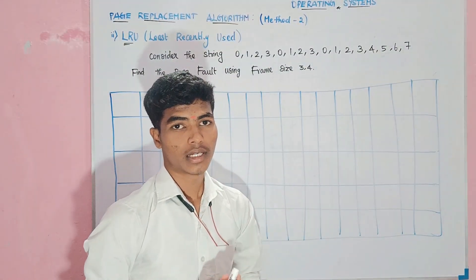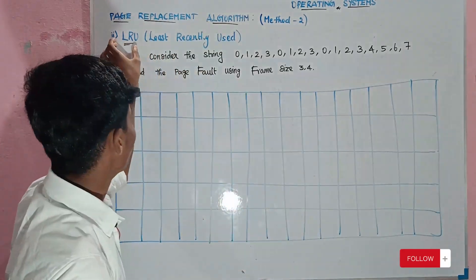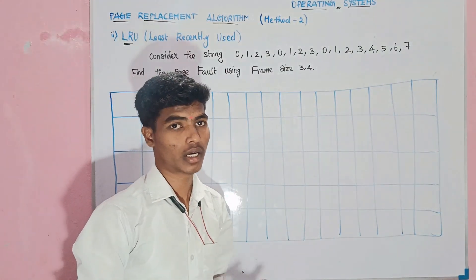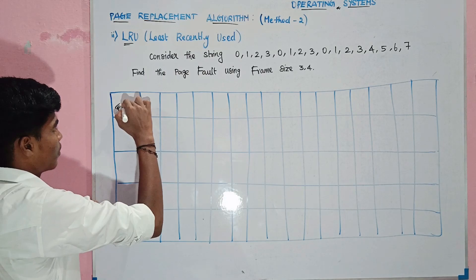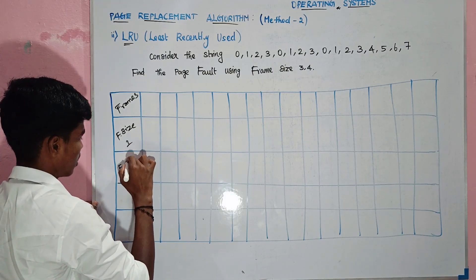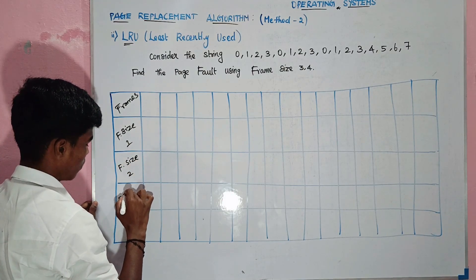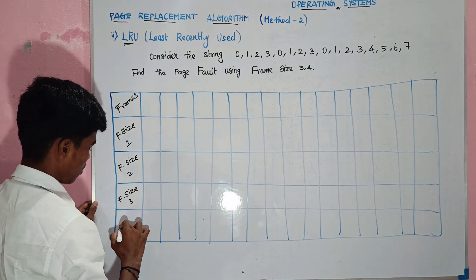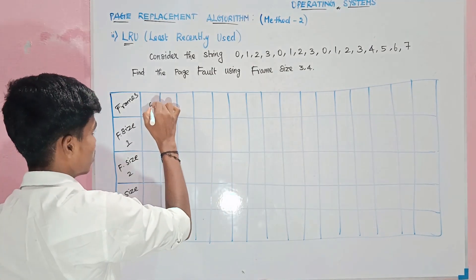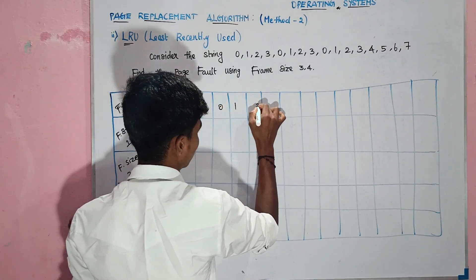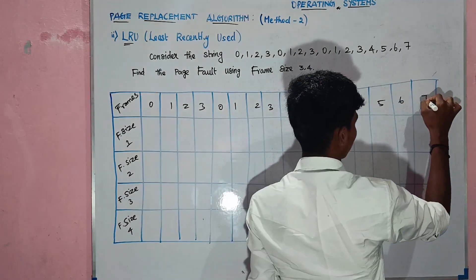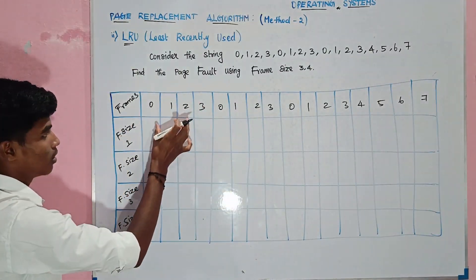Now we can see page frame size 4 with the same string. We can see the same string and find using the LRU finder. So page 4: we can see the frames — frame size 1, frame size 2, frame size 3, frame size 4. The reference string is 0 1 2 3 0 1 2 3 0 1 2 3 4 5 6 7. Now we can insert.